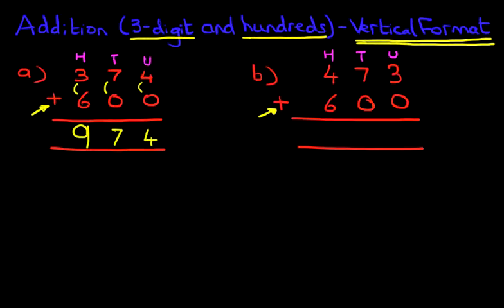Let's start the addition on the right-hand side first. 3 plus 0 is 3. 7 plus 0 is 7. 4 plus 6. So what is 4 plus 6? Well, you know this from your number bonds. It is 10.